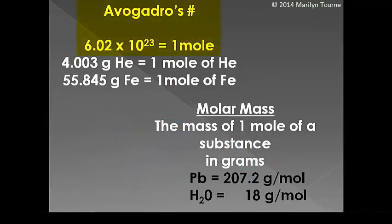So we know that Avogadro's number is equal to 6.02 times 10 to the 23rd. We also know that this number is the same as saying one mole of something. So now I'm going to tell you that there is something we call molar mass. Molar mass is the mass of one mole of a substance in grams.